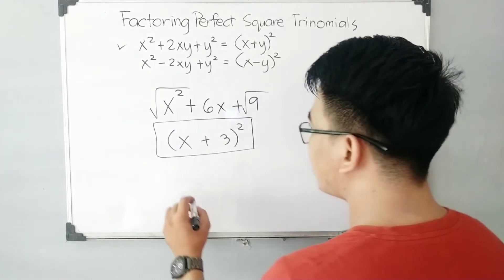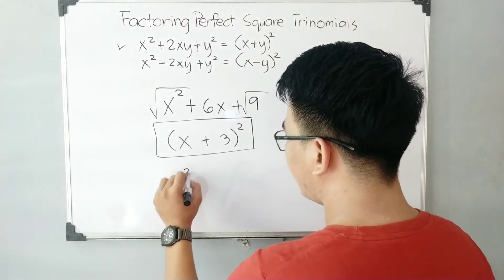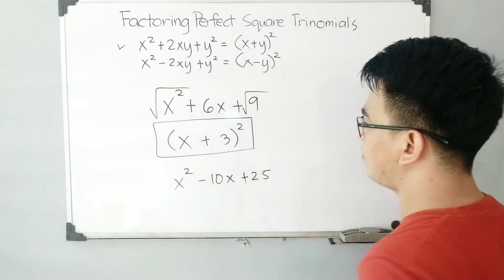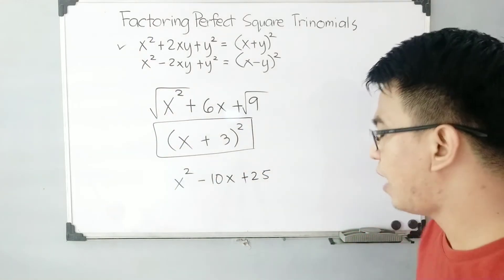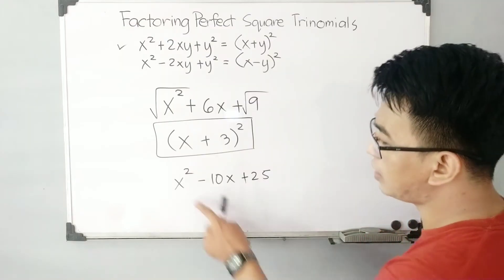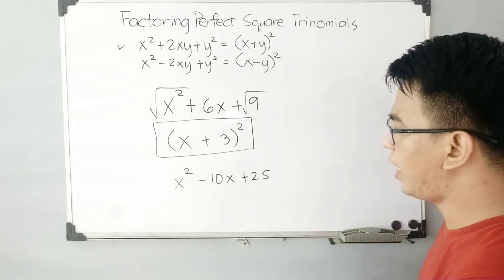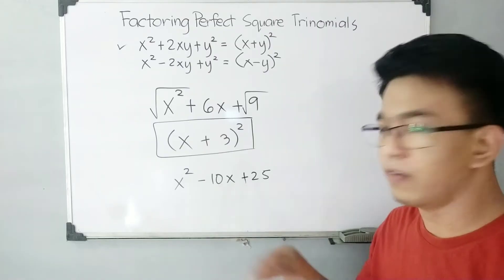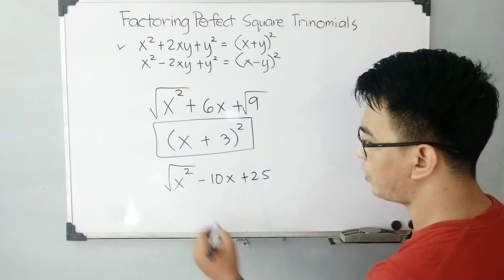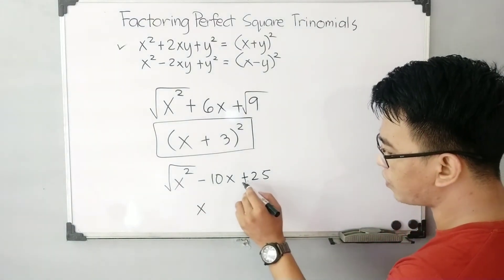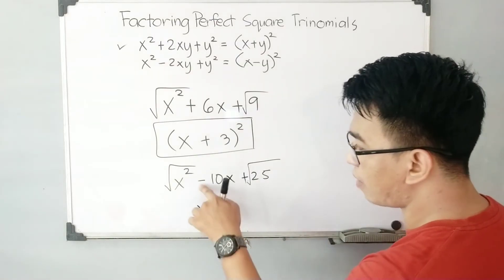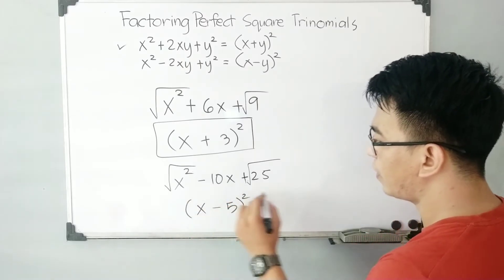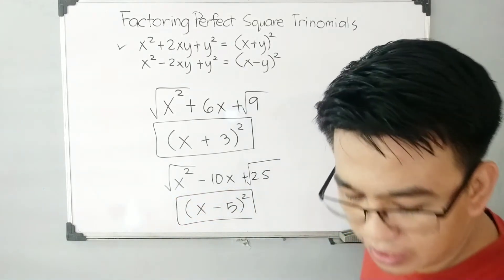Let me give you another example: x squared minus 10x plus 25. Before using the pattern, let's check if this is a perfect square trinomial. x squared is a perfect square, 25 is also a perfect square, and the square root of 25 is 5. So 5 times 2 is 10 — that's our middle coefficient. Get the square root of the first term: x. Get the square root of the last term: 5. Copy the sign of the middle term, minus, and raise to the second power. The factor is x minus 5 raised to the second power.